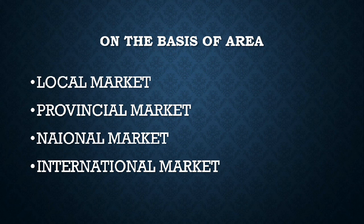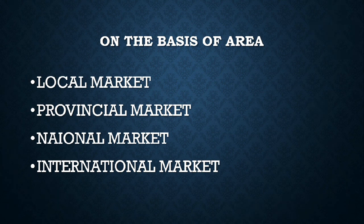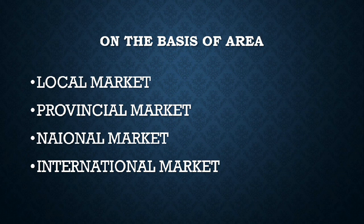If you look at the local market, you can buy products from the local side. We can buy goods from the local market within a restricted circle. For example, a provincial newspaper — we can buy it from the local market. This is restricted business.